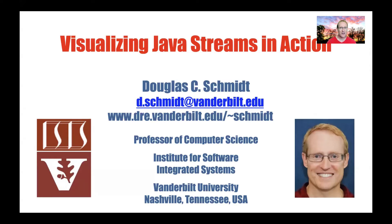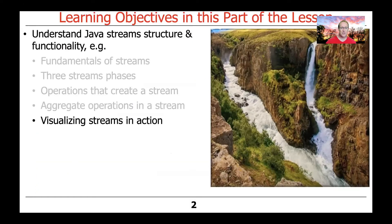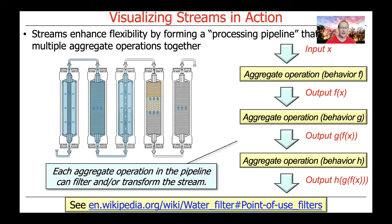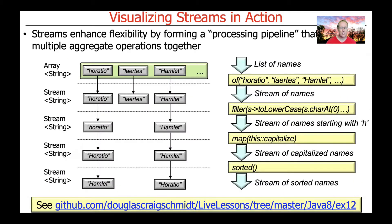I'm going to pick a particular example here to help clarify how everything works. Basically, why streams are useful is they help us to be able to compose our programs out of modular elements — these aggregate operations — that are linkable and assemblable together into pipelines. So it makes it really easy to plug and play the results. The water filter example is a good illustration of this, for being able to filter and transform the elements in the stream.